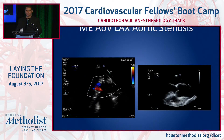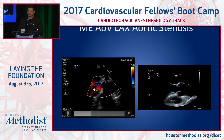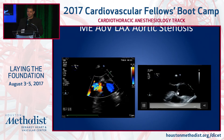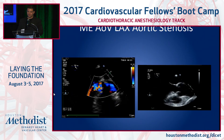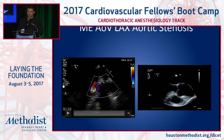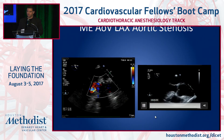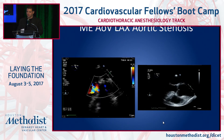Long axis aortic valve — same thing, aortic stenosis. You're going to see the leaflets on this side opening less well than in the normal one. It is associated in this particular image with some aortic regurgitation.